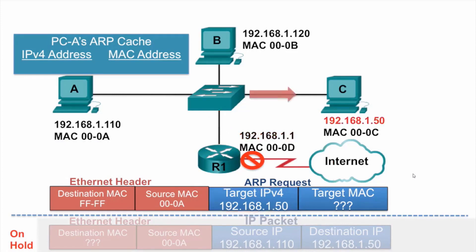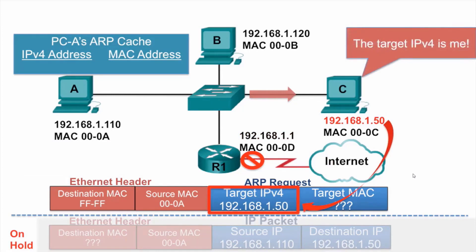PCC receives the ARP request, compares its IPv4 address against the target IPv4 address, and notices that it is the intended target of the ARP request — that the target IPv4 address does match its own IPv4 address. So PCC will need to send an ARP reply.